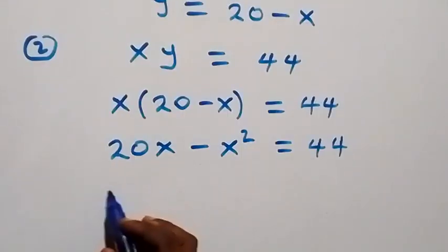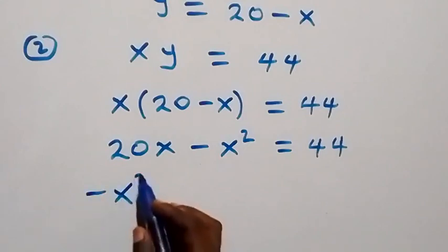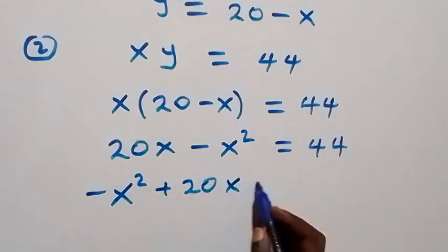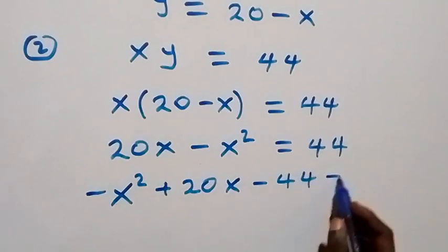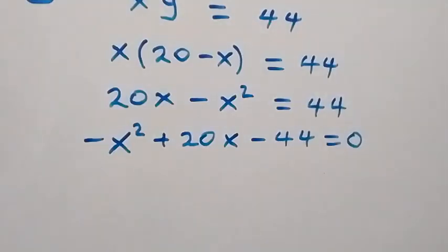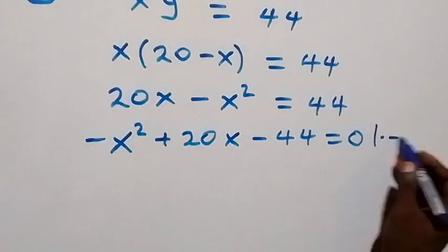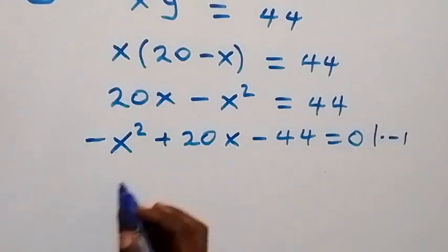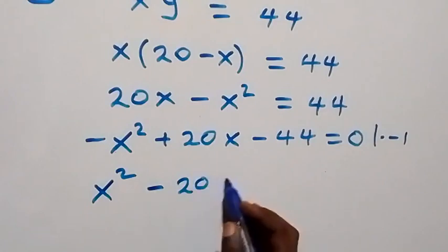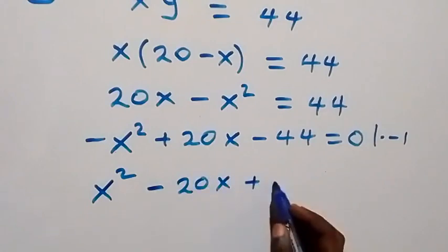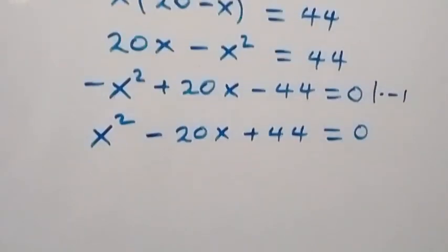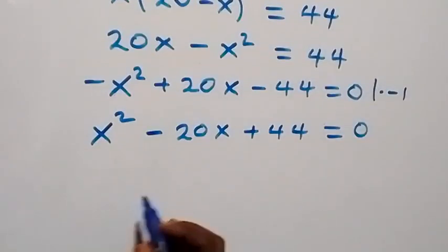When we rearrange and take 44 to this side, this gives us minus x squared plus 20x minus 44 equals to zero. We then multiply through by minus one to remove the minus, and this becomes x squared minus 20x plus 44 equals to zero.